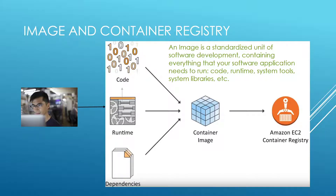So imagine you're a developer writing code and you want to build an image. In the image you have everything to run your application — your code, compiled code, your runtime, your dependencies. For example, if you're a Java developer, you have your Java code, compiled code, your JRE runtime, your Maven dependencies, etc., and you package them all into a Docker image. Then where do you put this image? Just like you put your code in a repo on GitHub or Bitbucket, we have a container registry for images.